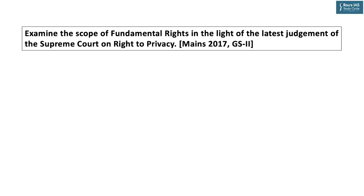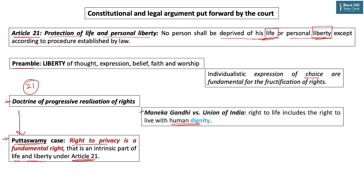The Puttaswamy judgment came in August 2017, and very shortly after, UPSC in Mains 2017 asked: 'Examine the scope of fundamental rights in the light of the latest judgment of the Supreme Court on right to privacy.' The question was how the scope of fundamental rights would change. If privacy is a fundamental right, then matters related to privacy — including the right to choose your partner for physical intimacy — also fall under Article 21.